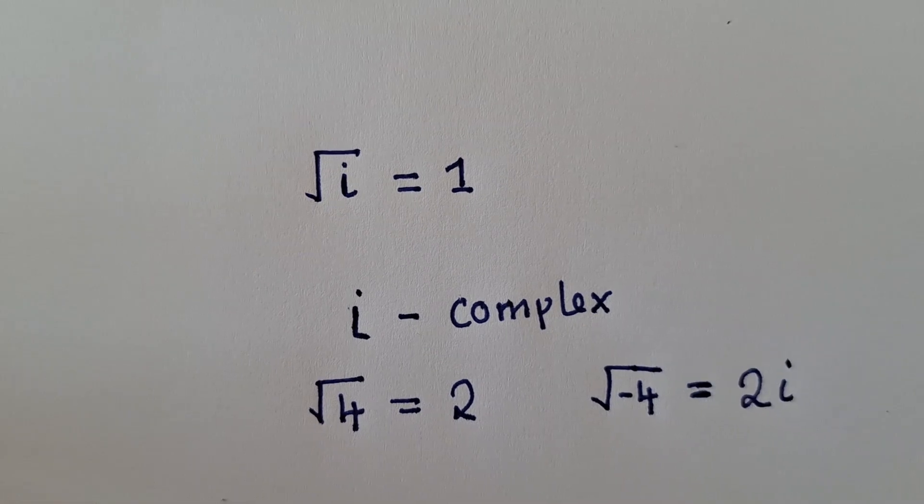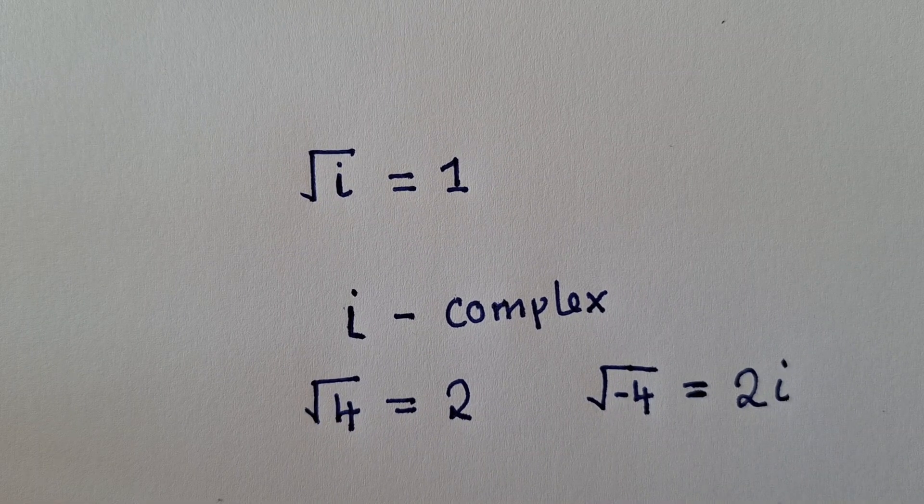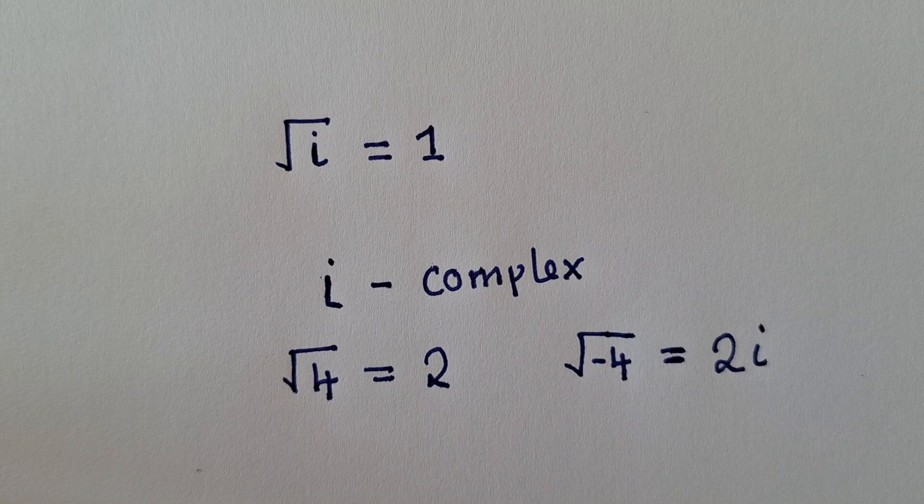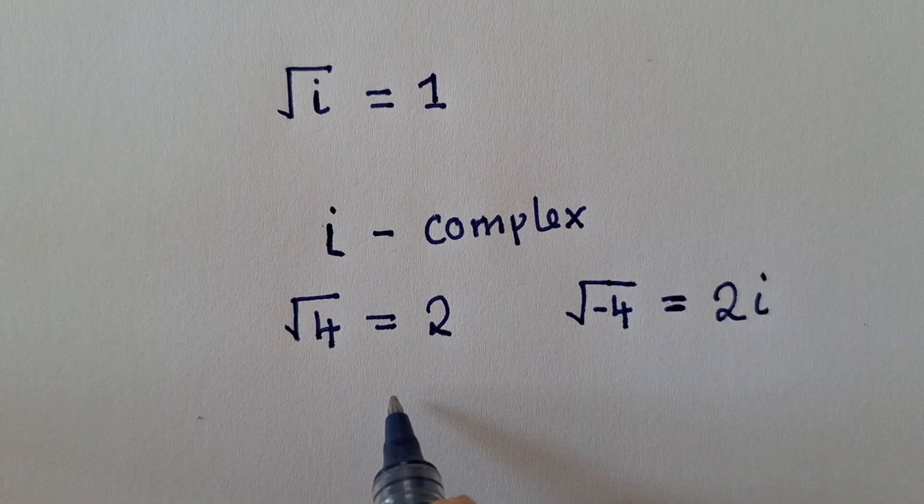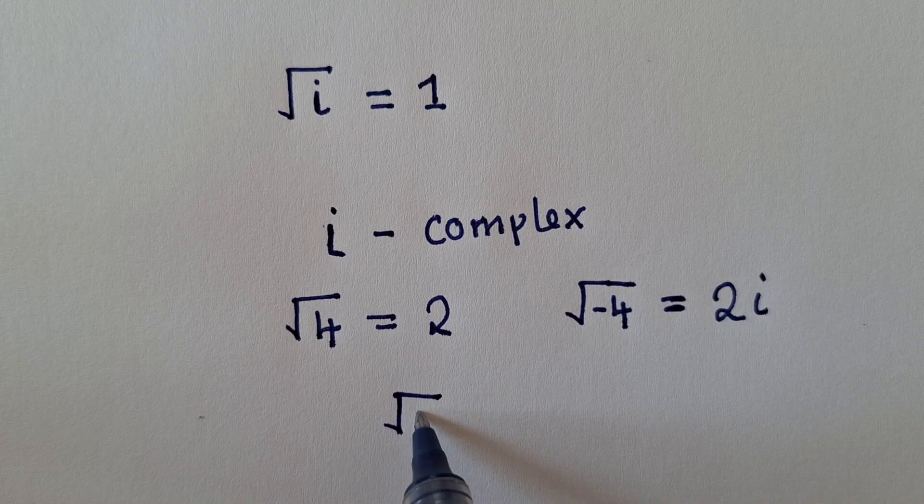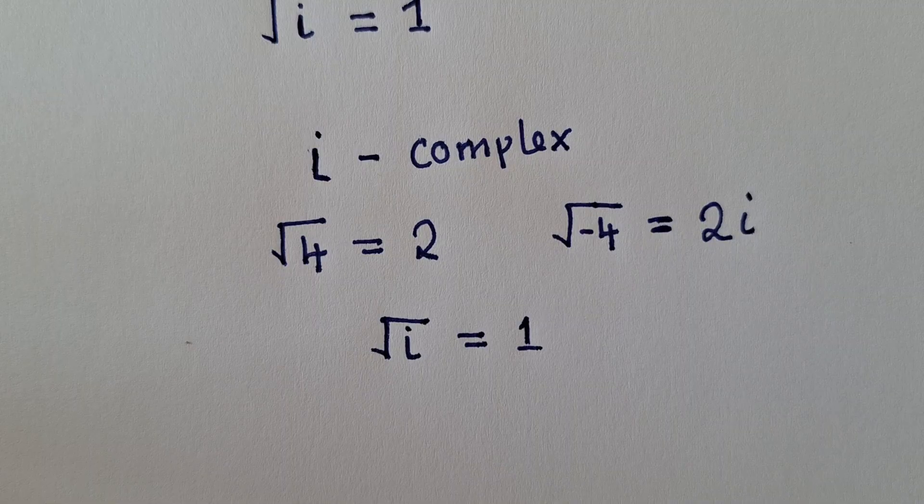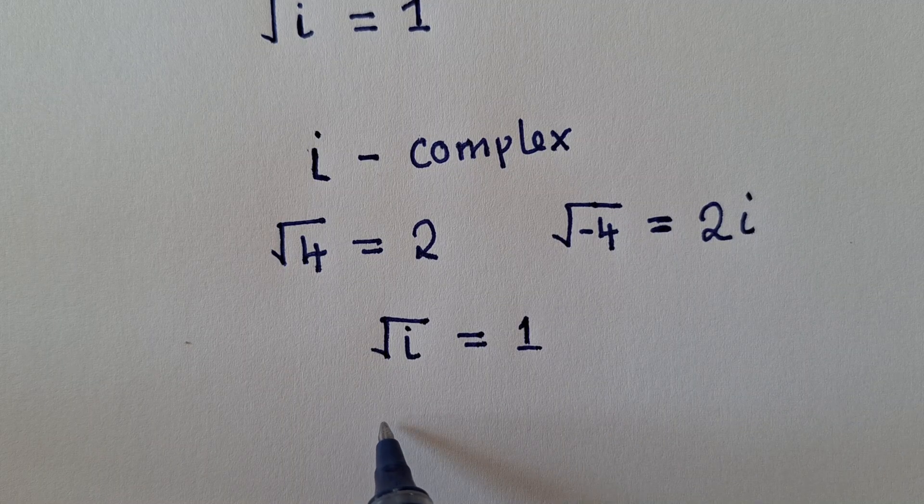So this is 2i. The square root of negative 4 will give us 2i. So this is what you need to know. Now, in this situation, they've given us √i is equal to 1. Is this true? Let's try to do this.